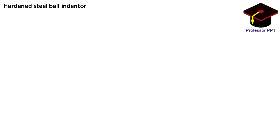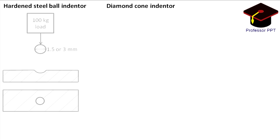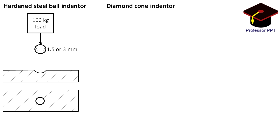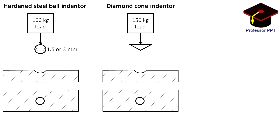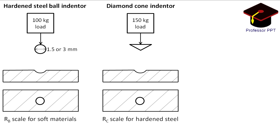A hardened steel ball or a carefully ground diamond cone is used as an indenter. Two sizes of balls are used: 1.5 mm and 3 mm. The diamond cone is ground to an angle of 120 degrees. Softer materials are usually tested on the B scale and the hardness values are written as RB. Hardened steel is tested on the C scale and the hardness number obtained is written as RC. The Rockwell A scale is generally used for hard materials, especially sintered carbides produced by powder metallurgy.